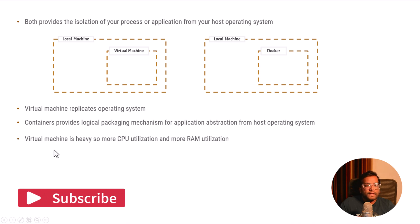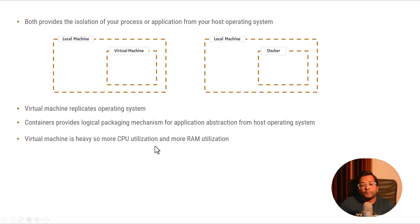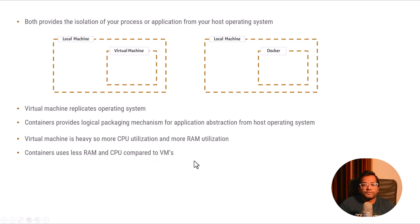Virtual machines are heavy — they require more CPU and more RAM utilization. This is the most important point differentiating virtual machines and Docker, and why Docker is more preferable. Since virtual machines mimic the whole operating system, they need more CPU and RAM — that is the biggest drawback. Containers use less RAM and CPU compared to virtual machines, whether you deploy them using Docker or LXC (Linux Containers).